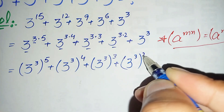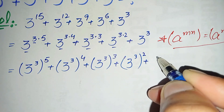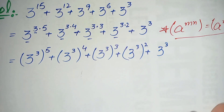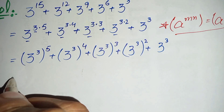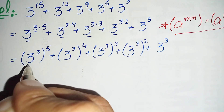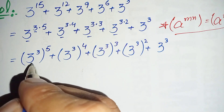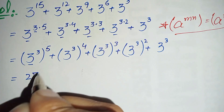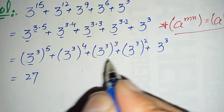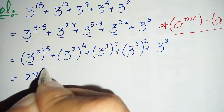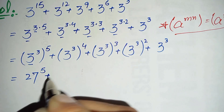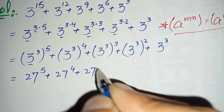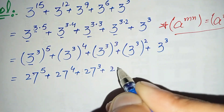Plus 3 to the power 3. Now we find the value of 3 to the power 3: 3 times 3 is 9, and 9 times 3 is 27. So the value of 3 to the power 3 is 27. We substitute 27 for 3 to the power 3 in all terms, giving us: 27 to the power 5 plus 27 to the power 4 plus 27 to the power 3 plus 27 to the power 2 plus 27.